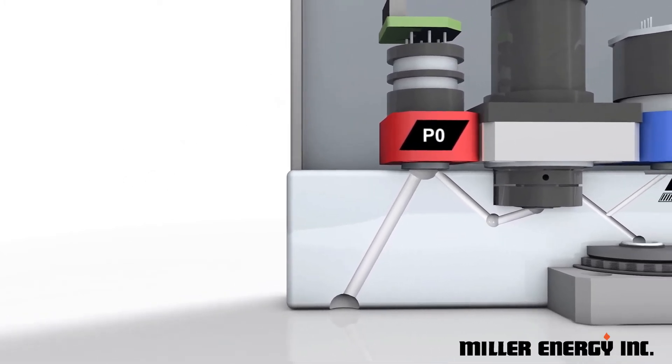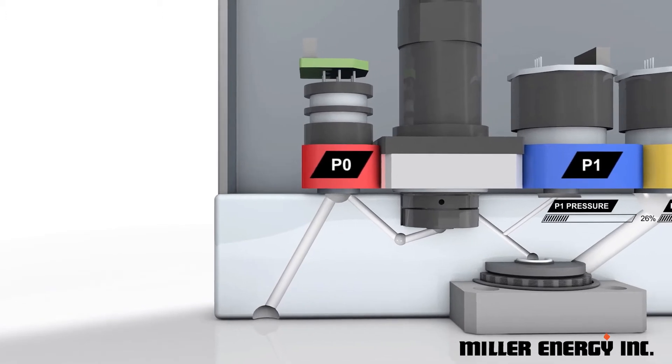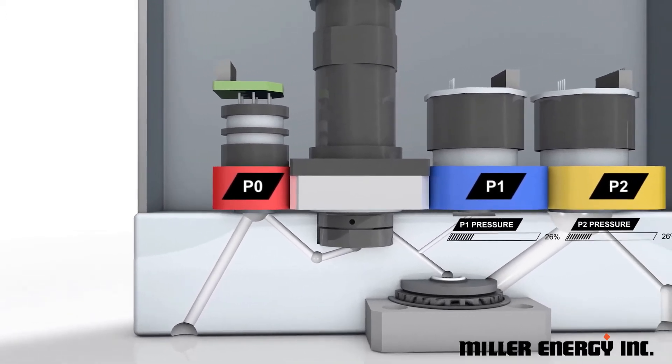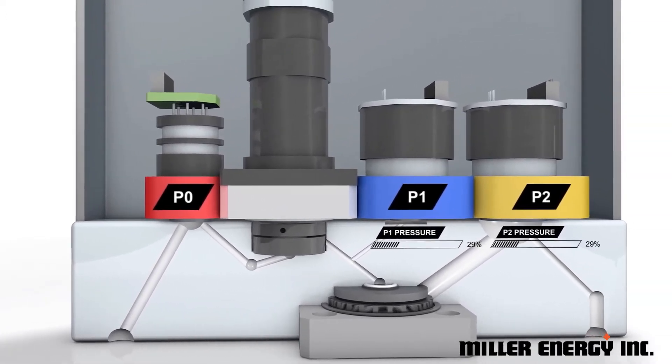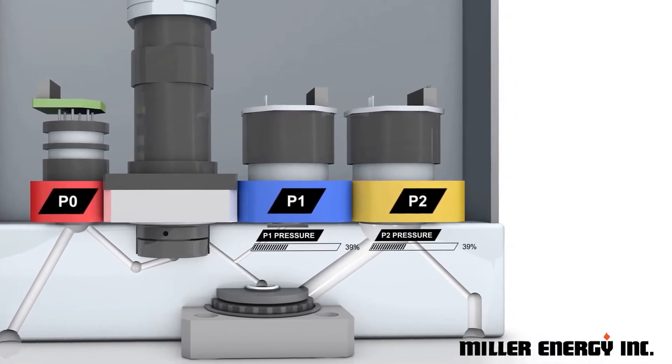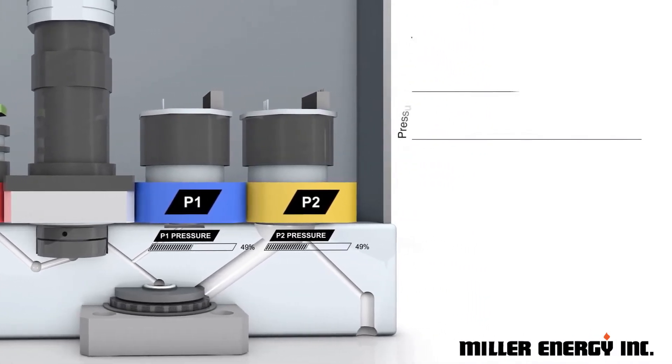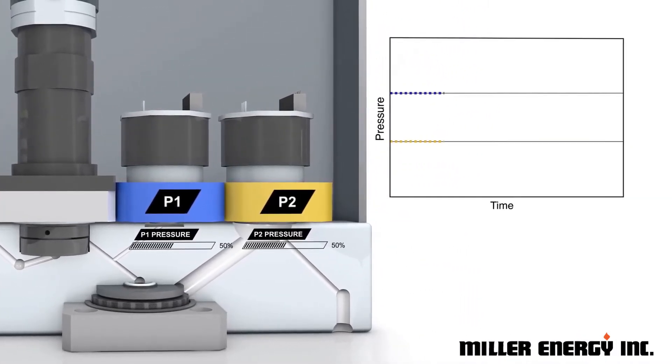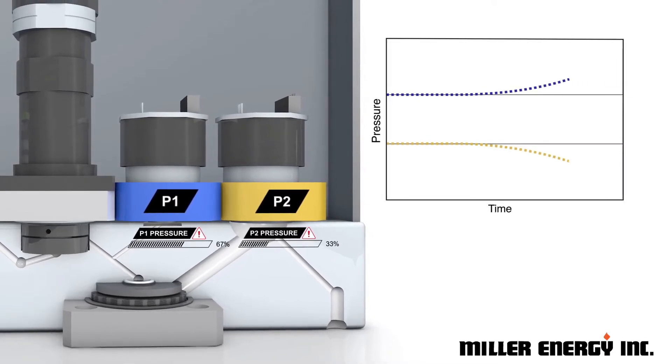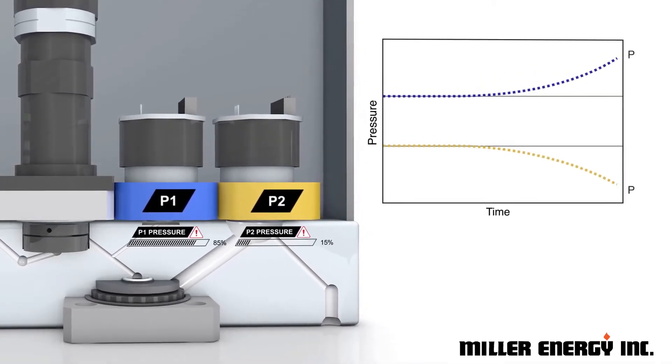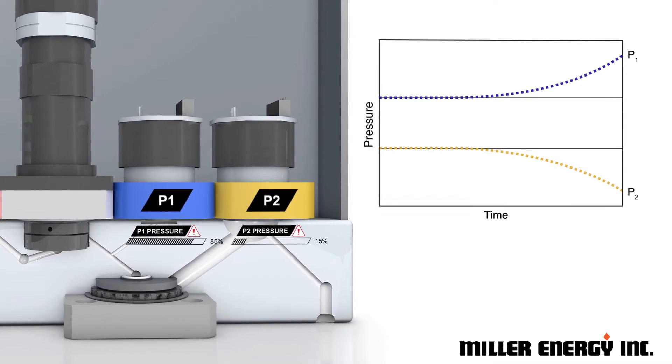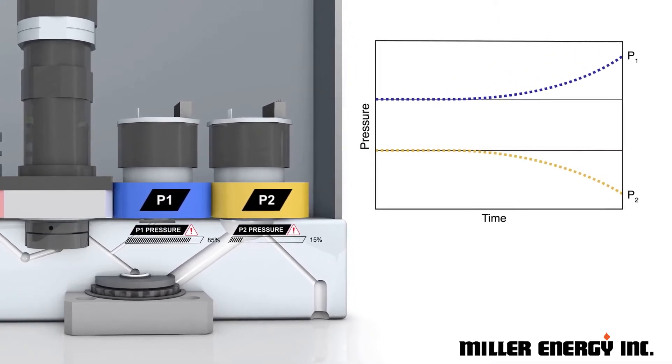This also means the two individual pressure transducers must be perfectly matched. By nature, all transducers exhibit some level of change over time. If they change by different amounts or in opposite directions, the product will become increasingly inaccurate as these offsets are squared in the mass flow rate calculation.